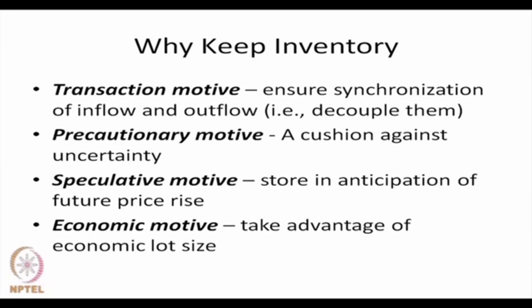The second is the precautionary motive — a cushion against uncertainty. Customer demand for a finished product may vary and is not constant. If it varies and one does not want to lose sales, there must be sufficient inventory so that even uncertain demand is met. This is usually called buffer stock to guard against uncertainty in demand variation.